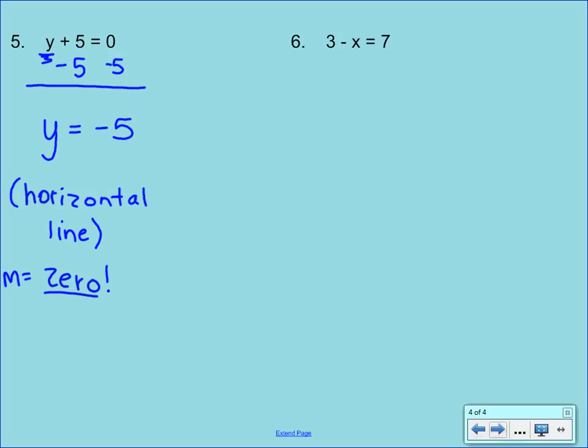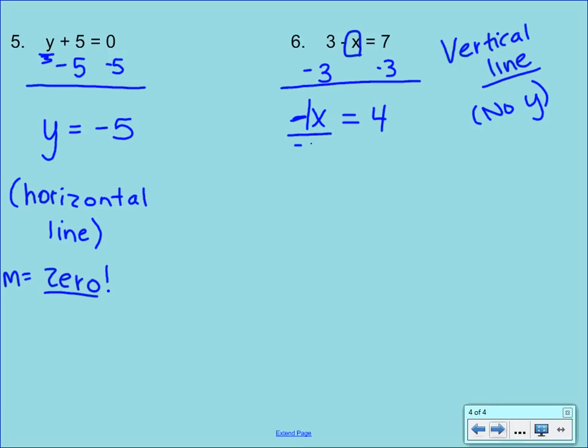So now, with our other example, we have 3 minus x equals 7. Again, what do we want to do? We want to get rid of whatever is on the same side as our x. But if you notice, there's no y. So this should hopefully be a dead giveaway as to what type of equation we're going to have. That already tells us that we are going to have a vertical line. And we know every single vertical line has an undefined slope. So what we want to do is subtract 3 from both sides of our equation. Remember to bring that negative sign down. So we have negative x equals 7 minus 3 is 4. And then we have actually a negative 1 that's in front of that x. We need to divide both sides by a negative 1. And our equation ends up being x equals negative 4, which is a vertical line.